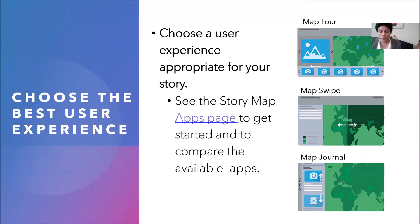The map journal, which we'll be demonstrating shortly, is one of the more commonly used story map types. It features images and text narrative on a side panel, with the main map displayed on a larger platform on the other side.